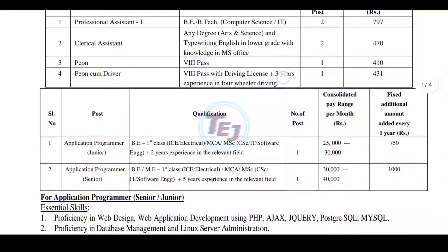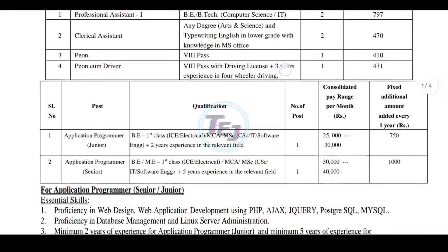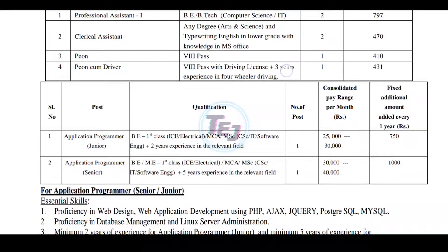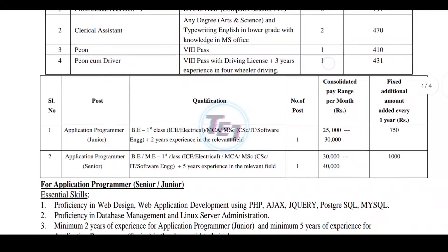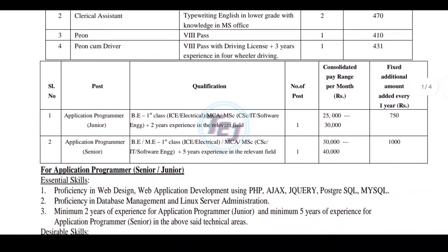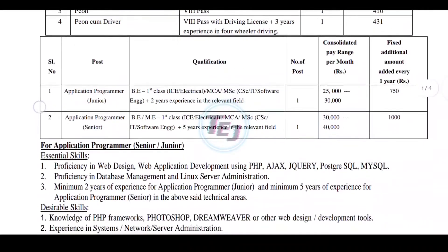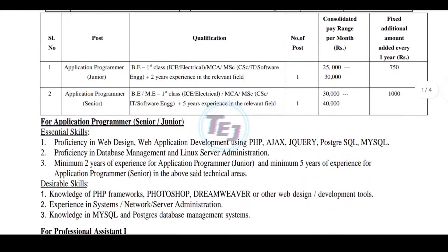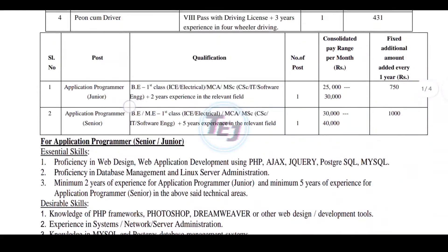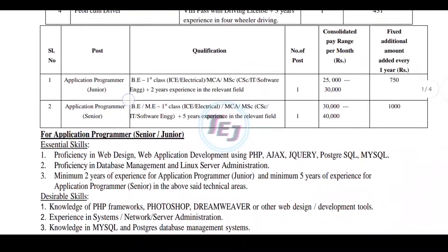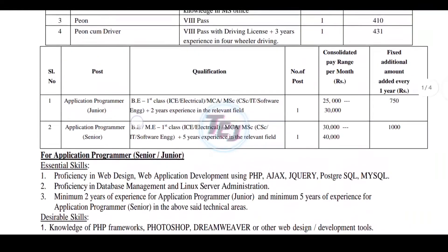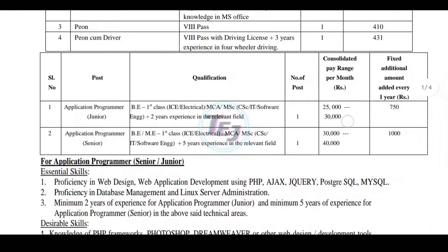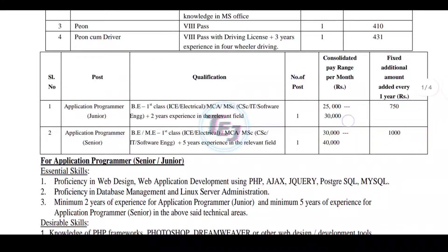There are three people in the driving license post. Here we have a post, and here we have two posts. Here we have a junior application programmer. Here we have a first class position with ICE electrical. Here we have two years of experience required. Here we have another post, first class, and 1100 rupees.